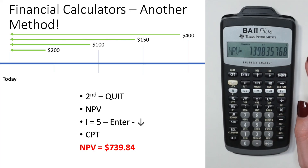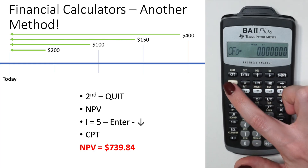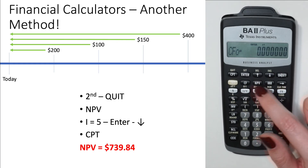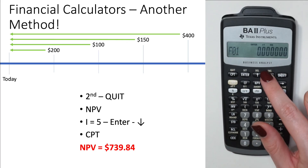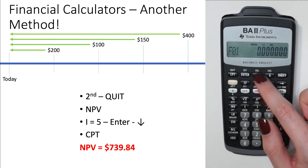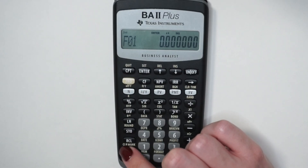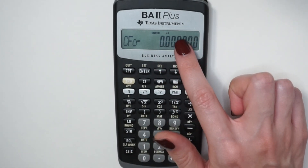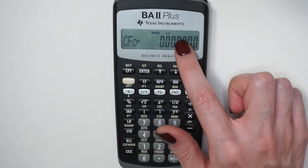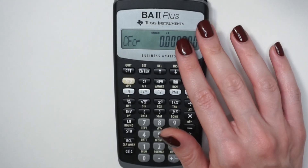When you're done, go back into the cash flow menu and clear everything out. When you do 2nd Clear Work, that clears all the cash flows previously entered. Make sure to do that before solving any new cash flow problems.